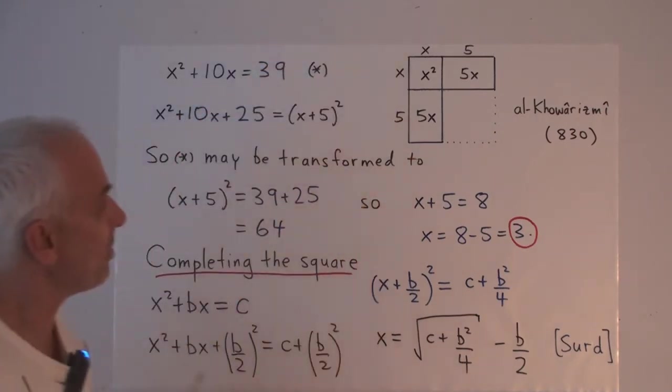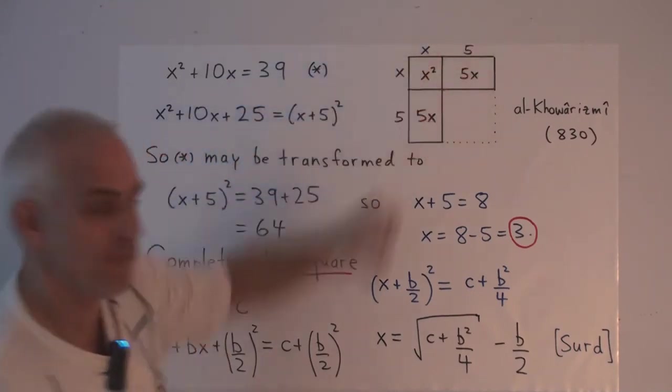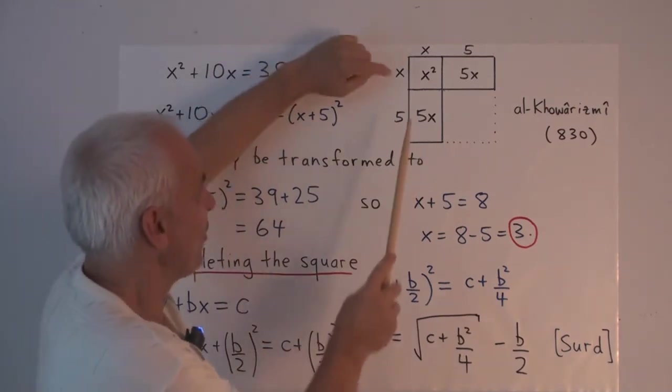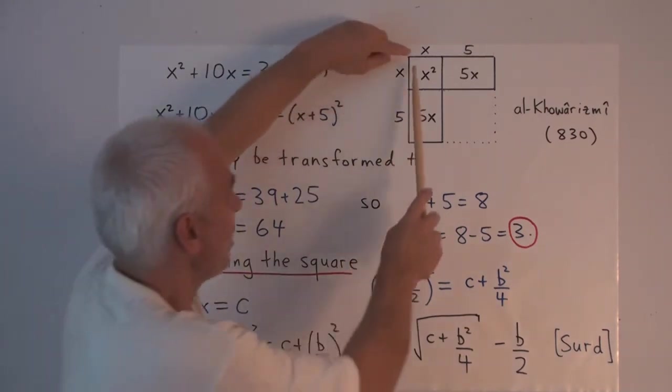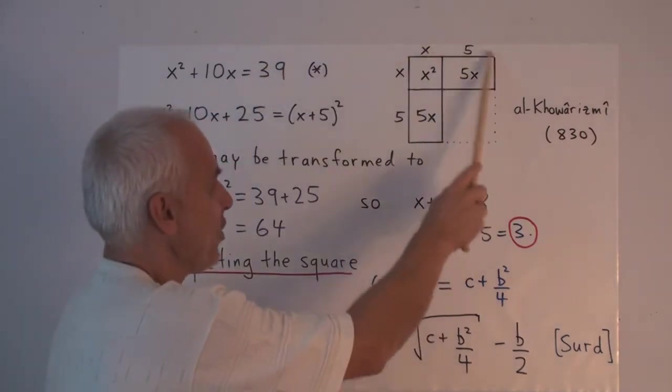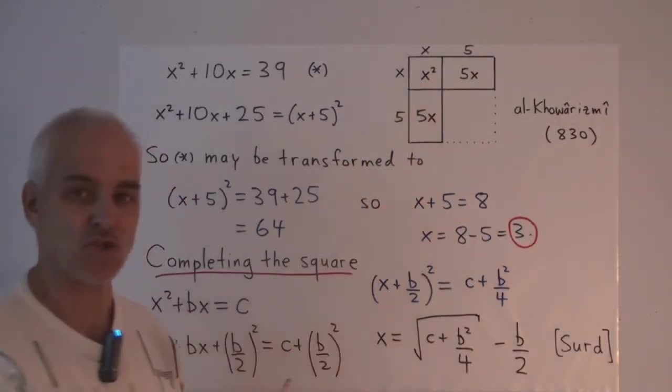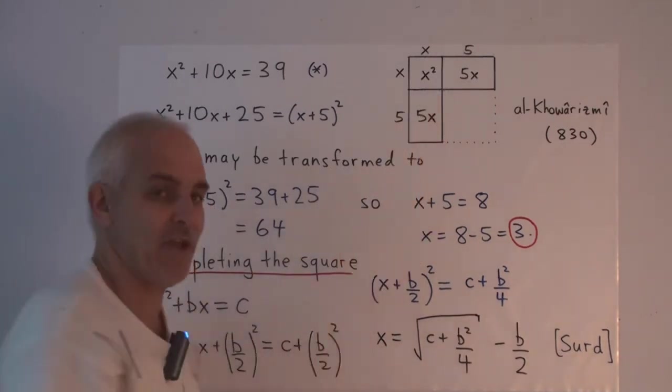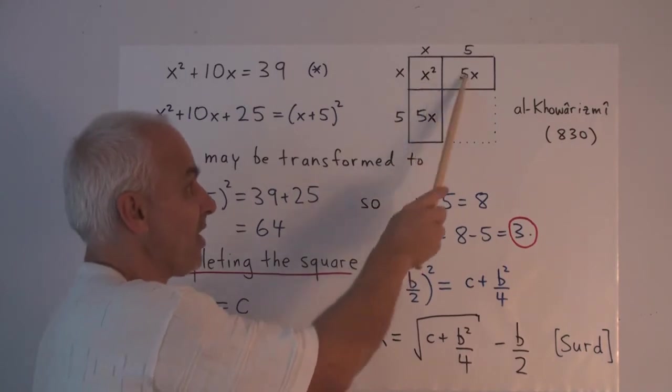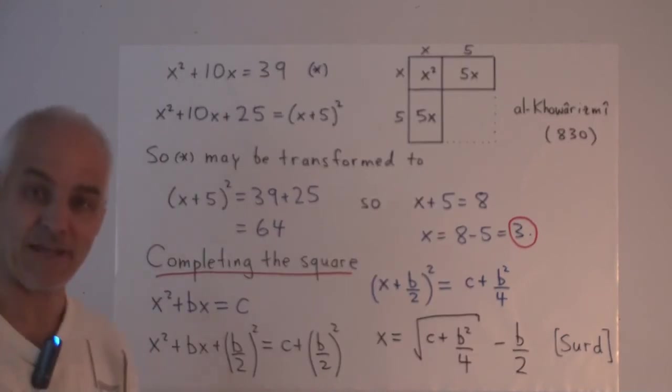had the following rather nice interpretation. So we think of a L-shaped figure like this. Where this has side x, whatever x is, and this has side 5. Here, symmetrically, x and 5. And we're thinking now about the area of this L-shaped region. Well, there's an x squared here for that square. And each of these rectangles has area 5x. So altogether, the area is x squared plus 10x because we have two of these guys. So that's exactly the left-hand side.